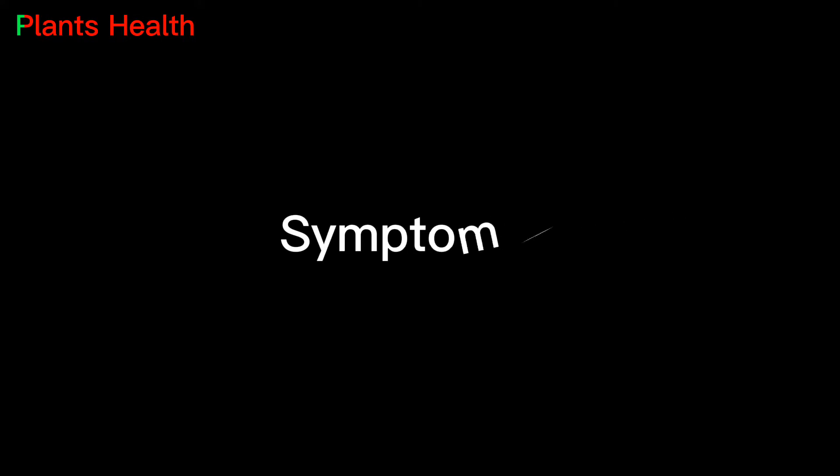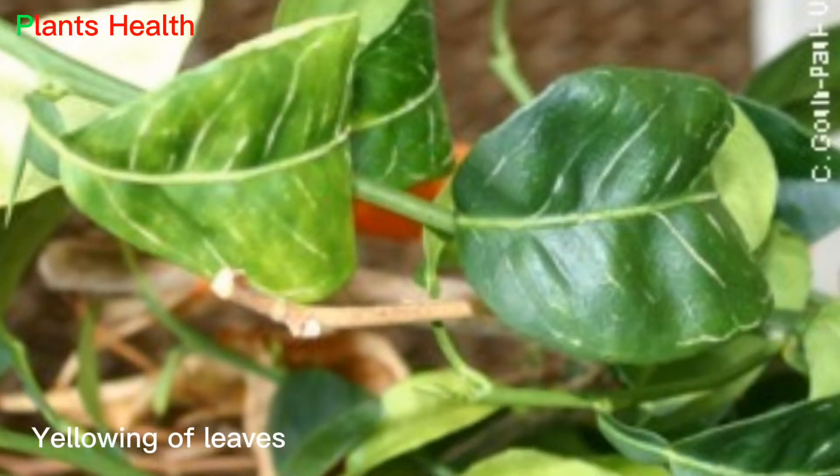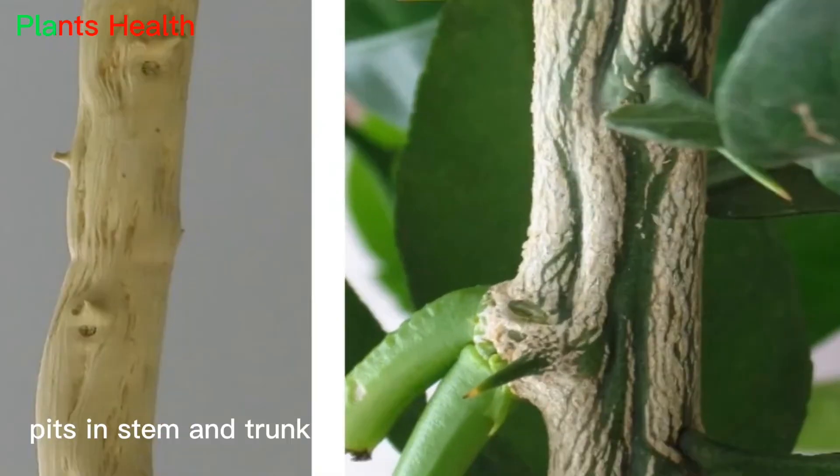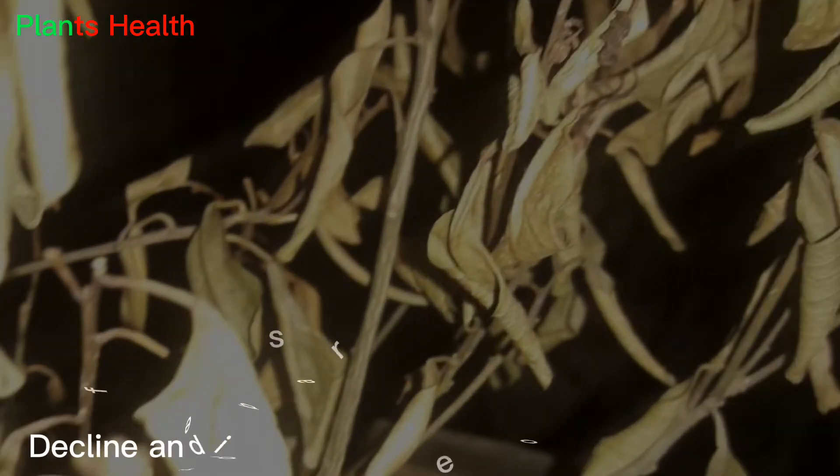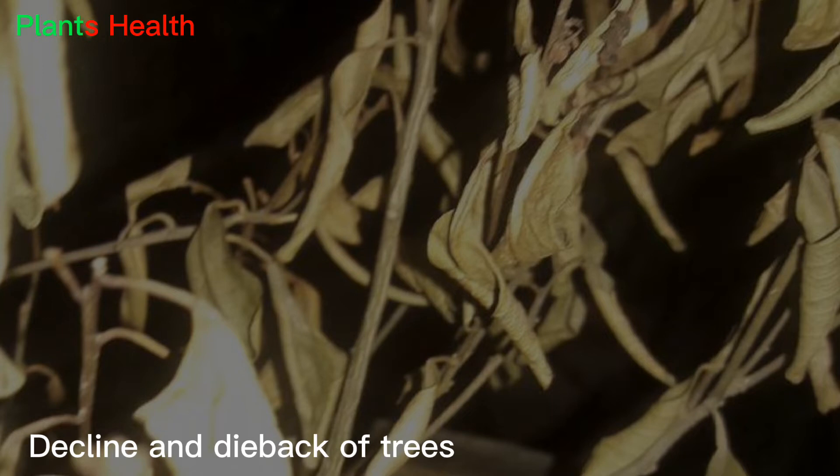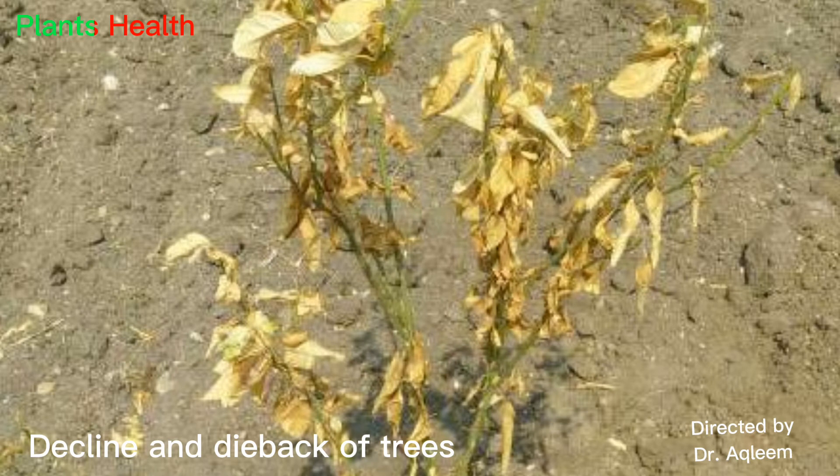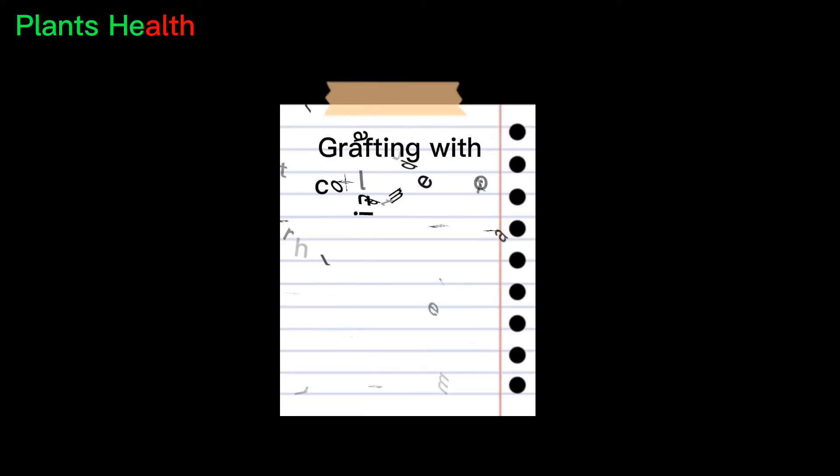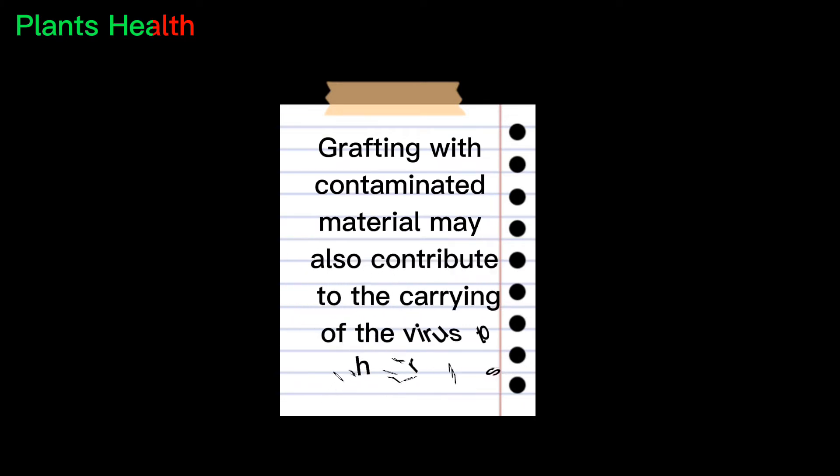Citrus Tristeza virus. Symptoms. Transmission. It is mainly transmitted in a non-persistent manner by the black citrus aphid, Toxoptera citriceta. Grafting with contaminated material may also contribute to carrying the virus to other farms.